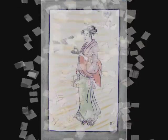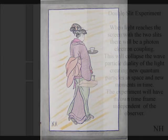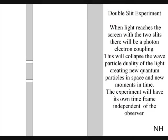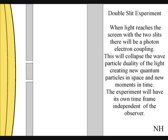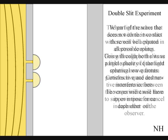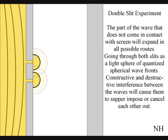The best way to see this happen directly with light is in the two-slit experiment. When the light reaches the screen with the two slits, the photons will react with the electrons of the screen. This will collapse the wave-particle duality of the light, creating new quantum particles in space and new moments in time. The part of the wave that does not come in contact with the screen will expand in all possible routes, going through both slits.